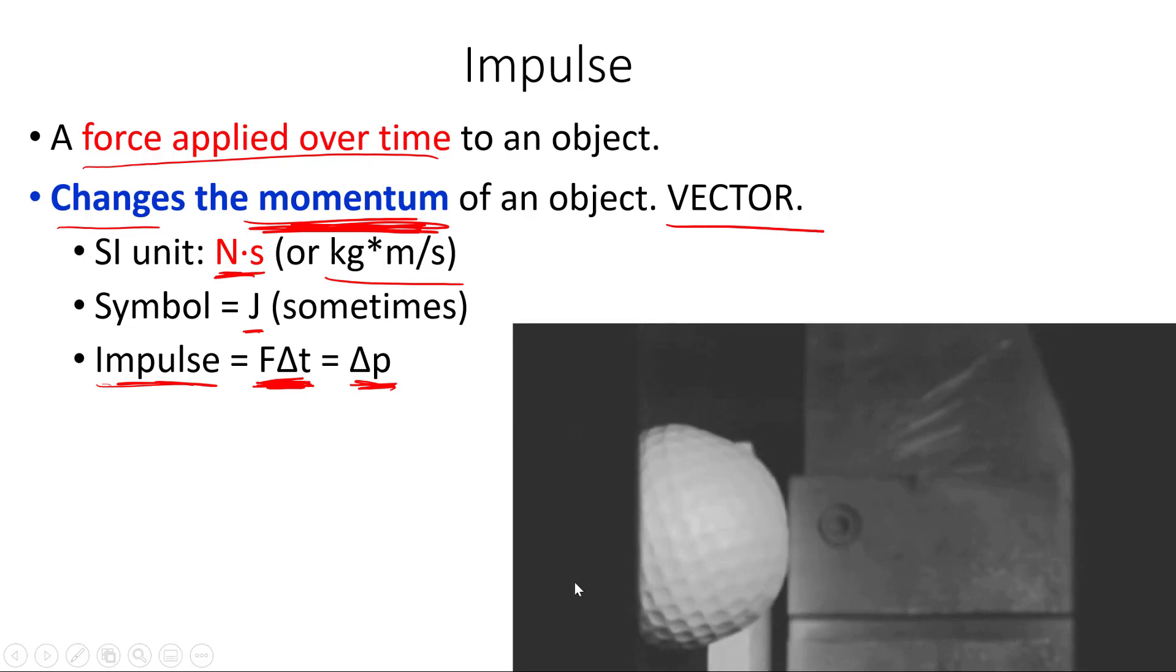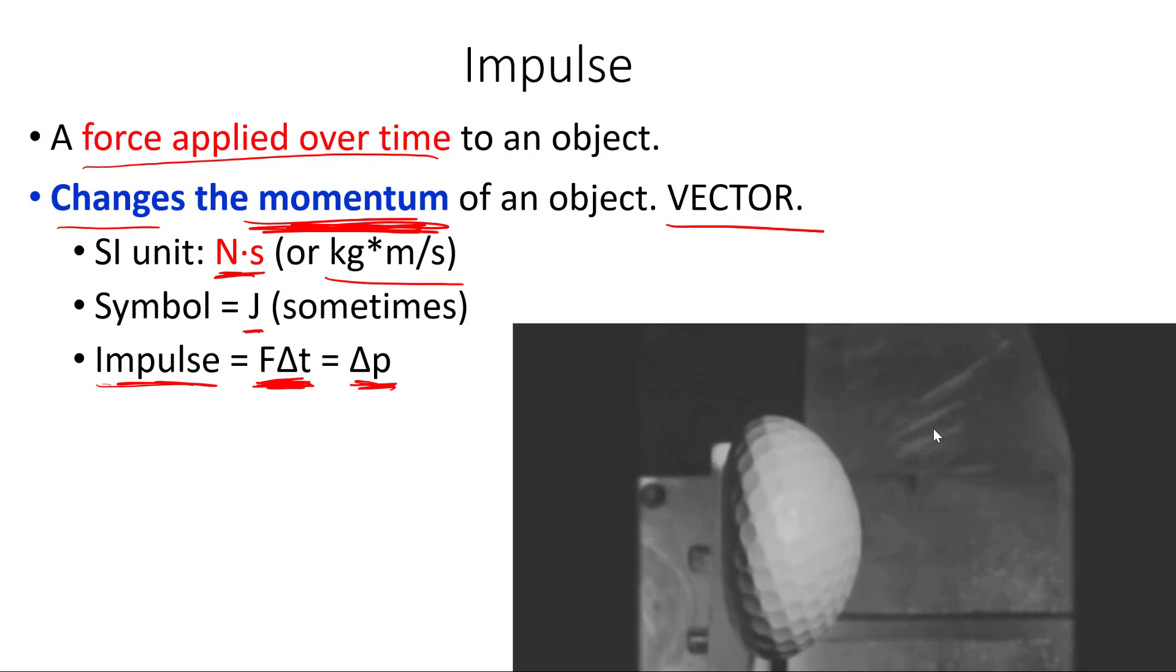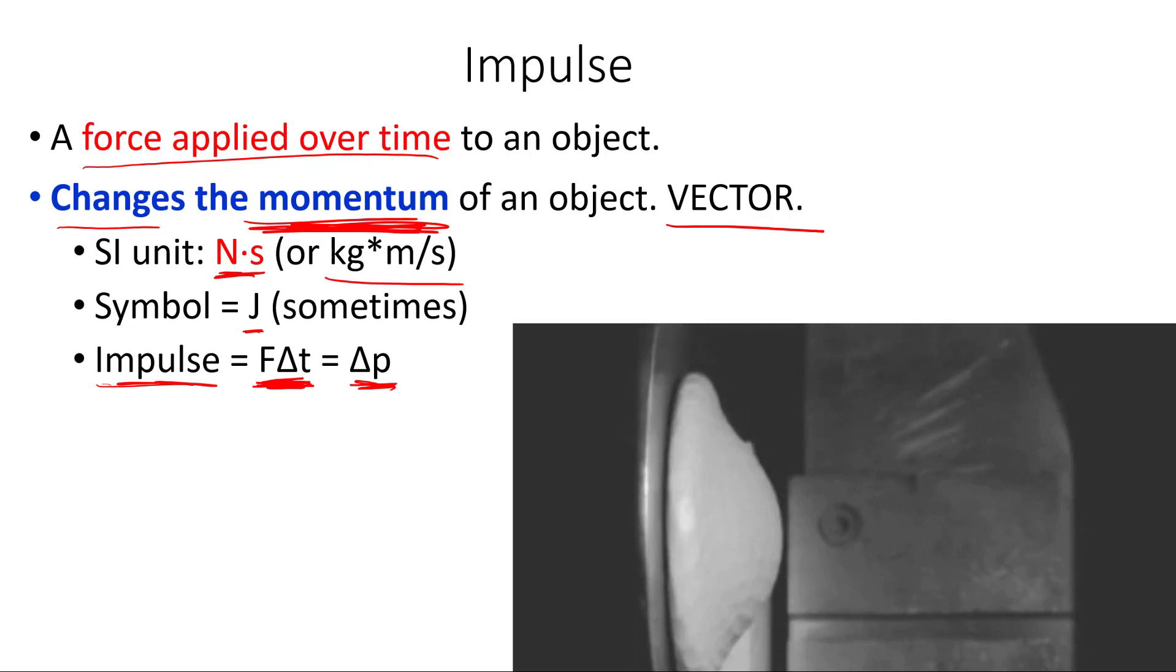Here's a nice ultra-slow motion GIF of a golf ball being fired against a wall. If we were to see it in normal speed, it would just bounce off the wall, and we wouldn't really see what happens. But when we look at it in slow-mo, we can see that the force is being applied over a period of time. The golf ball compresses and deforms.